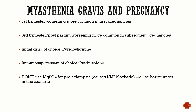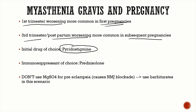In pregnancy, first-trimester worsening is common in first pregnancies; subsequent pregnancies show third-trimester or postpartum worsening. The drug of choice is pyridostigmine; the immunosuppressant of choice is prednisone, as mycophenolate mofetil is highly teratogenic and azathioprine is best avoided. Very importantly, do not give magnesium sulfate to myasthenic patients with preeclampsia, as it is a neuromuscular blocking agent and will worsen weakness — use barbiturates instead.